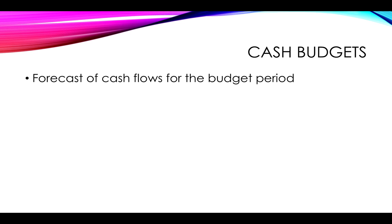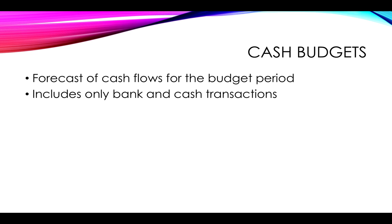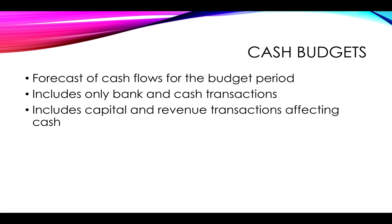You can then draw up your cash budgets from all these departmental budgets. A cash budget is simply a forecast of future cash flows for the period that is being budgeted for. It only includes bank and cash transactions, so when you buy or sell something on credit, it will not be taken into account. You will only plan for items that will affect your actual bank account or cash on hand. It will, however, also include all your capital and revenue transactions, as long as they are affecting cash. So if, for example, you buy non-current assets for cash, you will need to include this in your cash budget as part of your plan of where your cash will come from and where your cash will go out to.